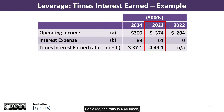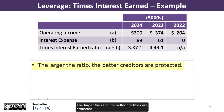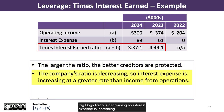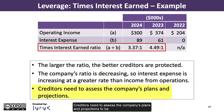For 2023, the ratio is 4.49 times, and we can't calculate the ratio for 2022 because there was no interest expense. The larger the ratio, the better creditors are protected. Big Dog's ratio is decreasing, meaning interest expense is increasing at a greater rate than income from operations. Creditors need to assess the company's plans and projections to be confident that the company will be able to generate sufficient operating income to cover the interest on debt.